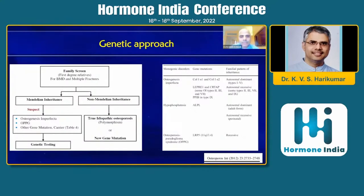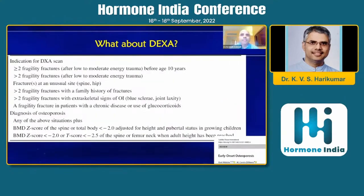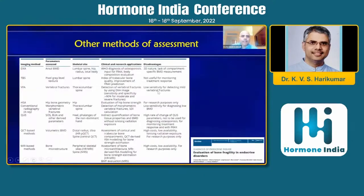A genetic approach is mostly relevant in osteogenesis imperfecta patients; other mutations are quite rare and not relevant in clinical practice. DEXA is definitely useful for documenting the Z-score at that point of time and possibly helps in follow-up depending on whatever interventions are done. Because these are younger age groups, classical guidelines don't apply well. Indications for DEXA include more than two fragility fractures or fractures at unusual sites. Other modalities like TBS, HSA, QUS, and QCT may be useful in the future but currently DEXA remains the primary tool.